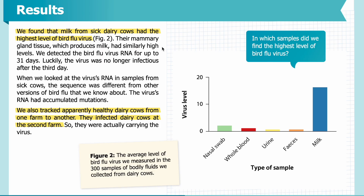Their mammary gland tissue, which produces milk, had similarly high levels. We detected bird flu virus RNA for up to 31 days, though luckily the virus was no longer infectious after the third day. When we looked at the virus's RNA in samples from sick cows, the sequence was different from other known versions of bird flu — the virus's RNA had accumulated mutations. We also tracked apparently healthy dairy cows moved from one farm to another, and they infected dairy cows at the second farm, so they were actually carrying the virus.